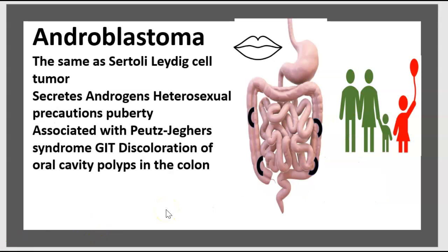Androblastoma is the same as Sertoli-Leydig cell tumor. It secretes androgens, causing precocious puberty. Androblastoma is associated with Peutz-Jeghers syndrome — a gastrointestinal condition with discoloration of the oral cavity and polyps in the colon.